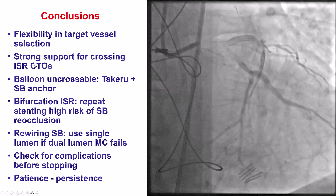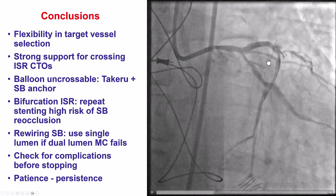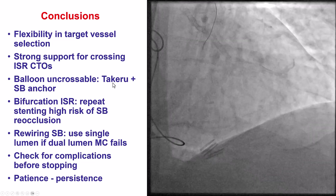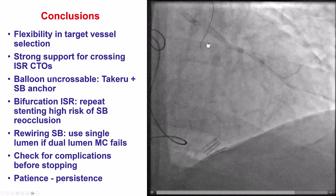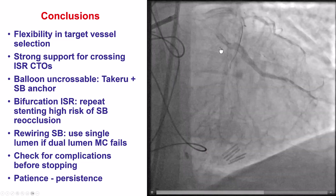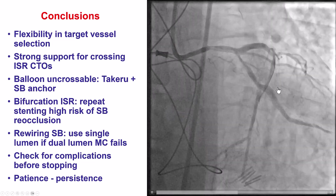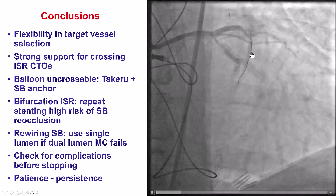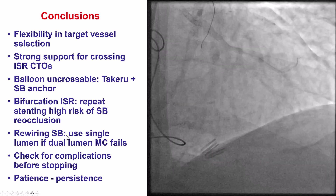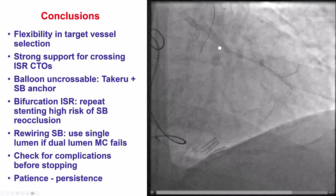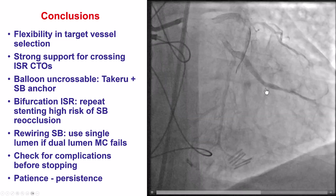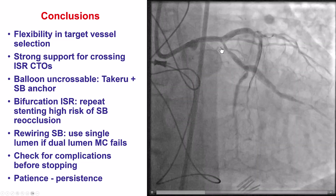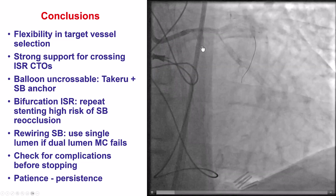Second, the importance of strong support. We had to use a guide extension and side branch anchor technique for delivering equipment into the circumflex. For balloon uncrossable lesions, we used the Takeru balloon with side branch anchoring, which was very effective in crossing through that uncrossable segment. We had a previously stented bifurcation, and stenting one branch resulted in occlusion of the other. Whenever we stent through a bifurcation that has already been stented, there is an increased risk of compromising flow in the side branch. Interestingly, rewiring into the side branch was very difficult through a dual-lumen microcatheter, but was successful using a single lumen — sometimes paradoxically the single lumen works better.